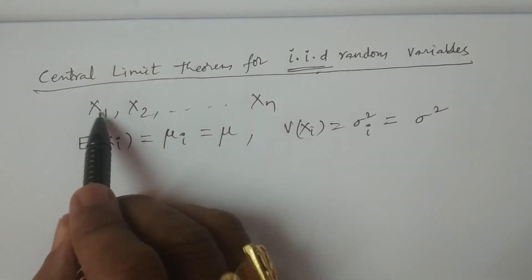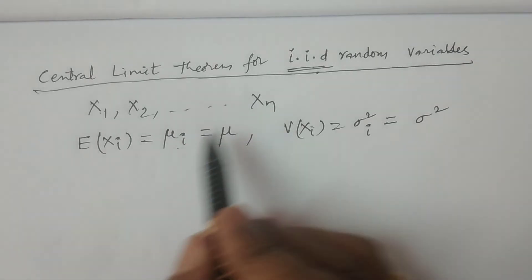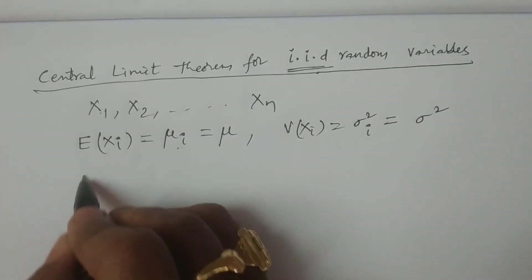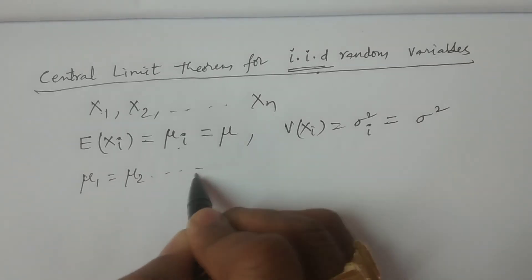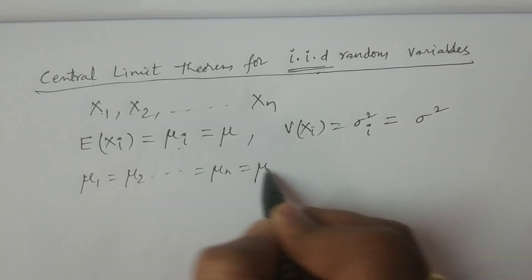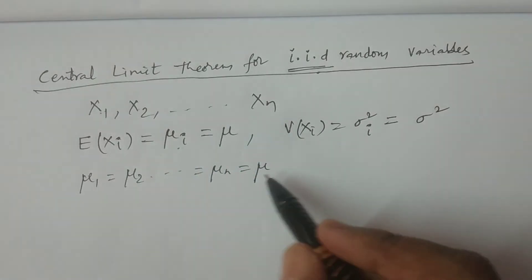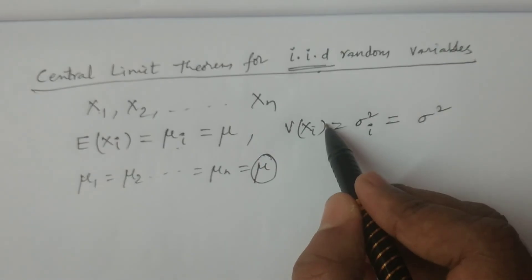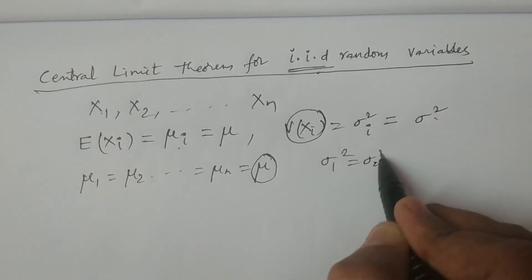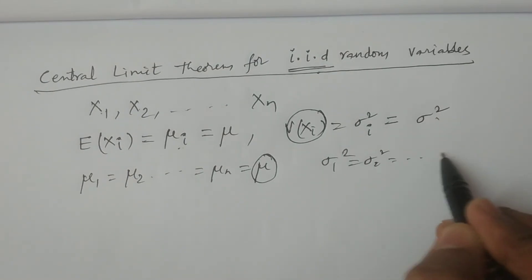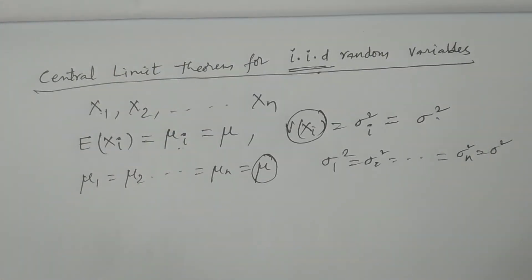So E(x₁) = μ₁, E(x₂) = μ₂, ..., E(xₙ) = μₙ, and all μ₁ = μ₂ = ... = μₙ = μ, which are the same. All random variables have the same mean. Similarly, all random variables have the same variance: σ₁² = σ₂² = ... = σₙ² = σ².